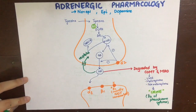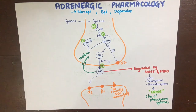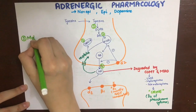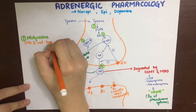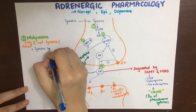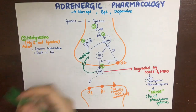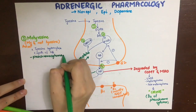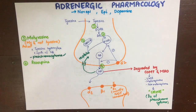Now we'll look at the drugs acting on this diagram, represented by numbered sites. The first drug acts at site number one by inhibiting tyrosine hydroxylase. This drug is called metyrosine. It acts as a competitive substrate for tyrosine hydroxylase, thereby inhibiting the synthesis of noradrenaline. It is used in some cases of pheochromocytoma.